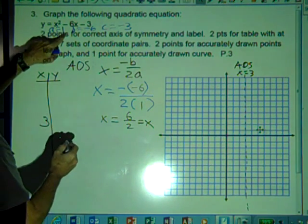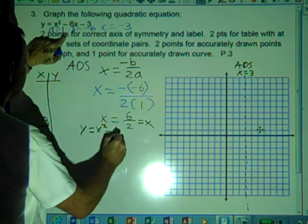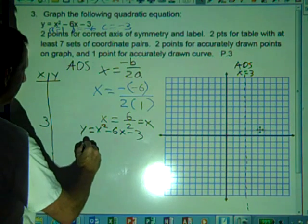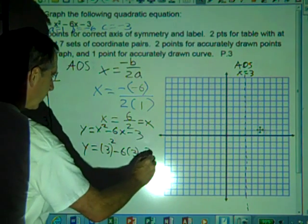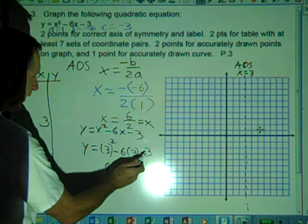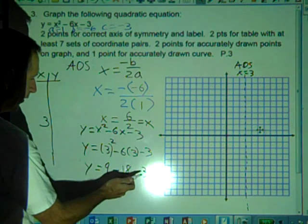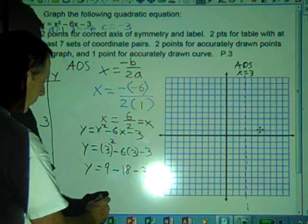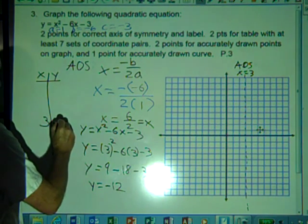We're going to start and build the table from here. The first thing we'll do is take the original equation, y equals x squared minus 6x minus 3, and substitute the value of 3 into this function. So we have 3 squared minus 6 times 3 minus 3. 3 squared is 9. So we have 9 minus 6 times 3, which is minus 18, minus 3, which is going to equal 9 minus 18, is negative 9 minus 3. So y equals negative 12.